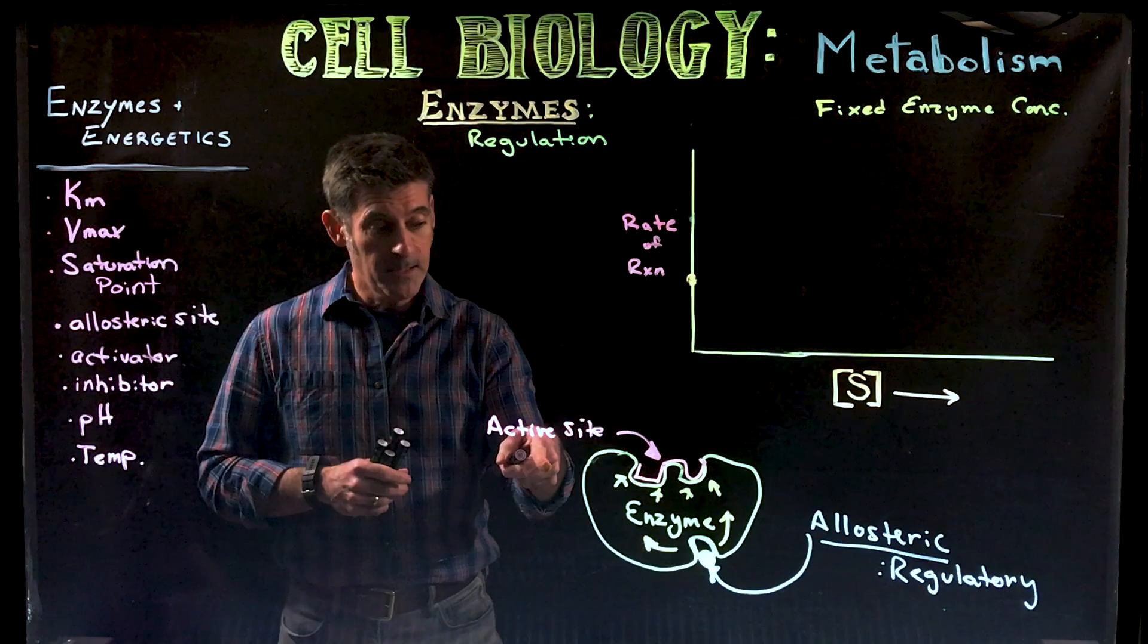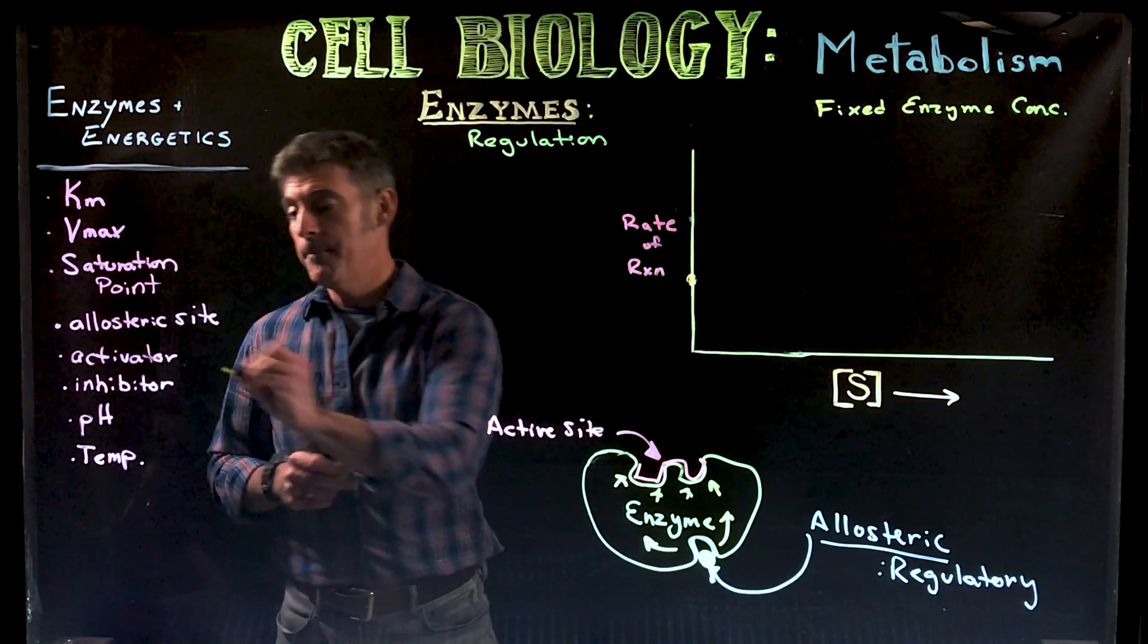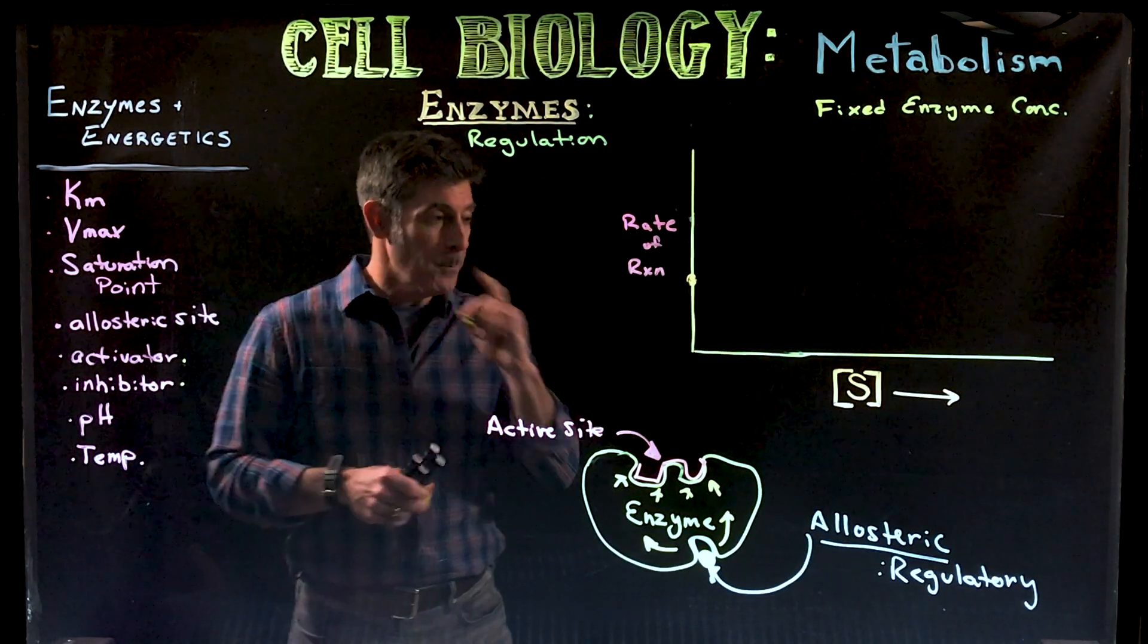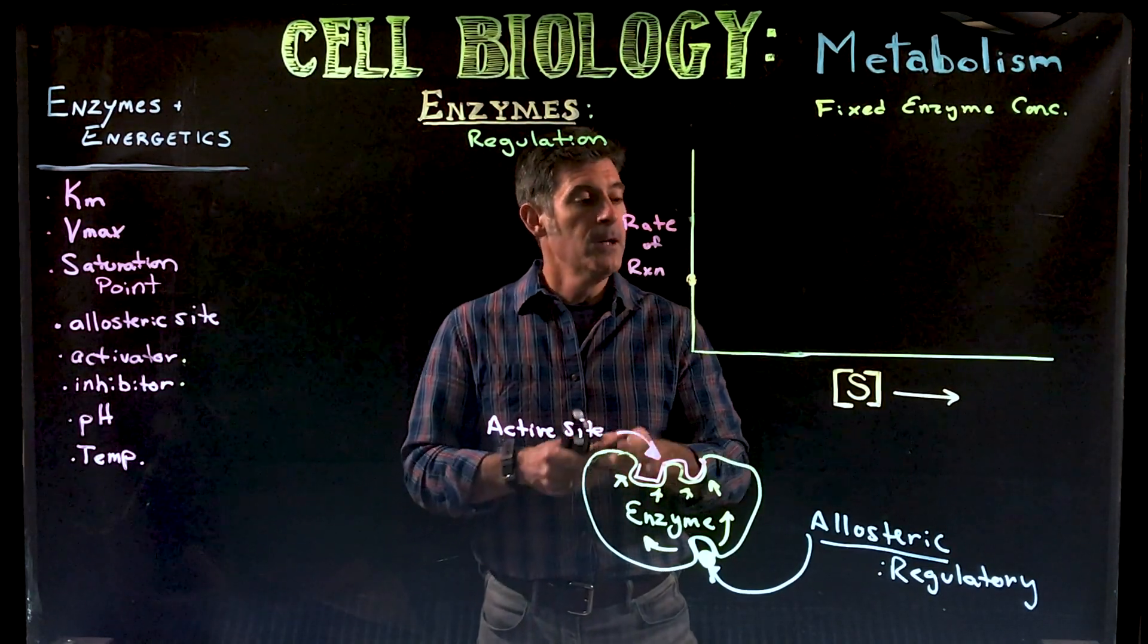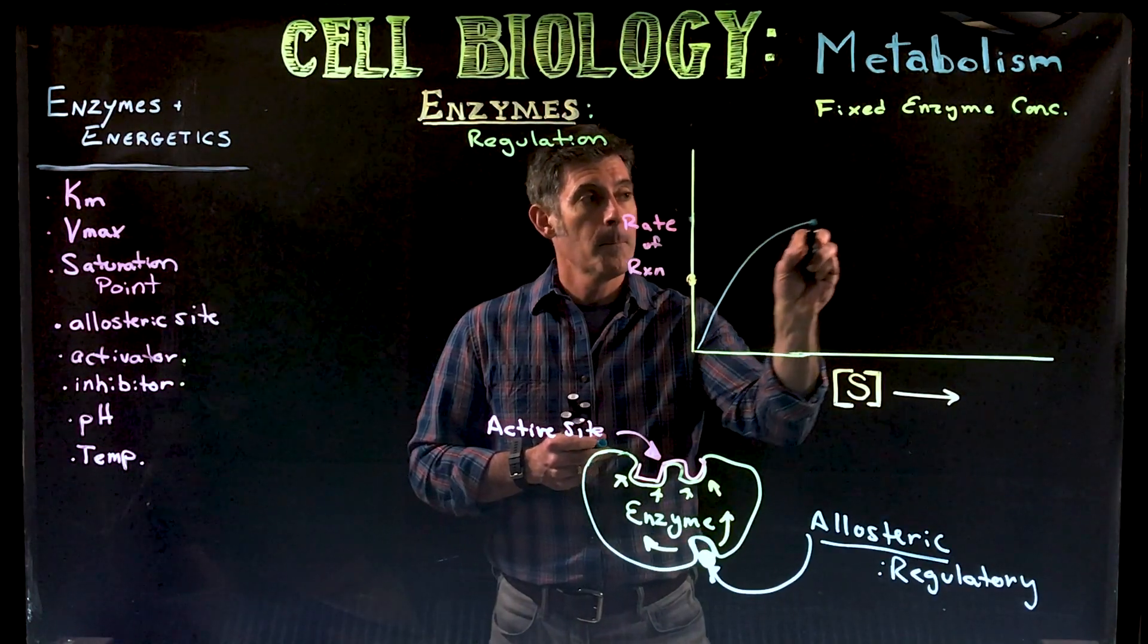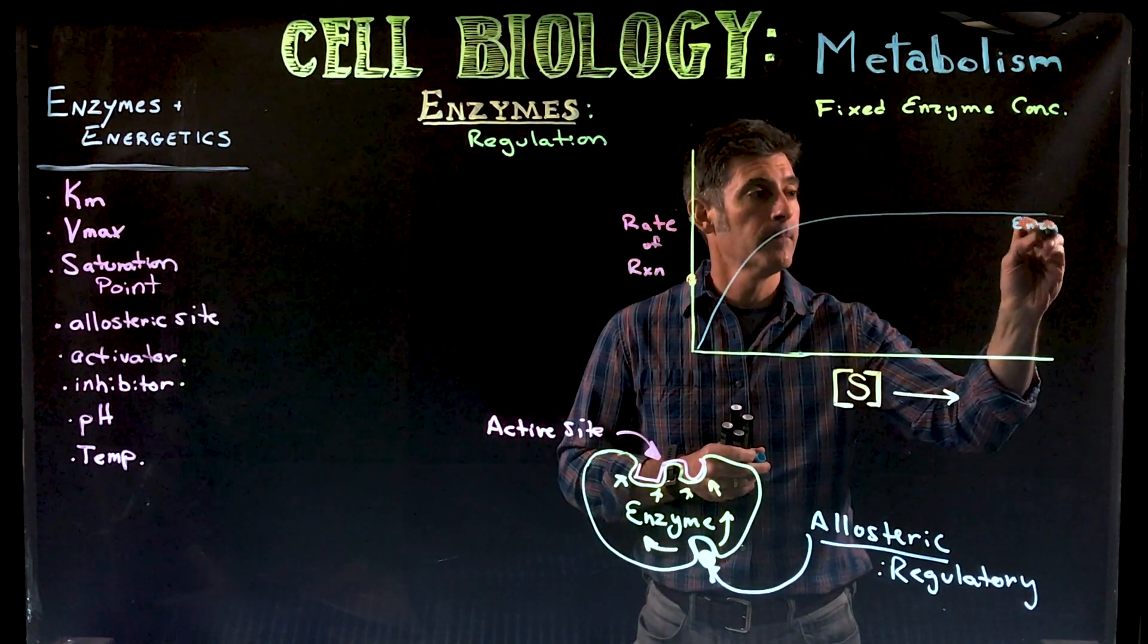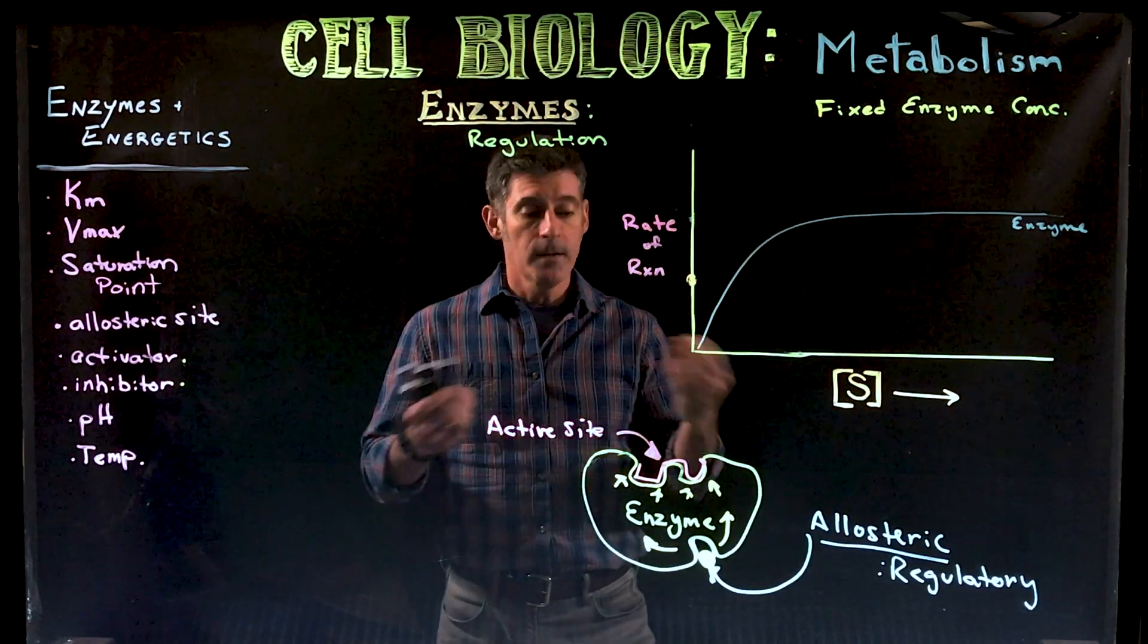There are different ways in which the allosteric site can do that. There are what we call allosteric activators and allosteric inhibitors. So coming back into the graph here that we looked at before, for a typical reaction what we might see is a curve something like this. So this is just the straight enzyme and how it behaves on its own.